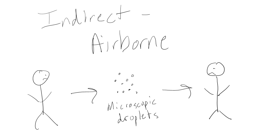Airborne transmission involves the transmission of an infectious agent through particles that are suspended in air. These suspended particles could be microscopic water particles, dust particles, or any other type of particle that can be suspended in air. For example, a patient might enter a doctor's office and cough, and droplets from their cough may stay suspended in air long enough that the next patient who enters the office becomes infected.